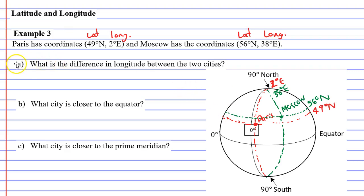Now question A says, what is the difference in longitude? Longitude being the key word, between the two cities. And longitude is talking about the 38 and the 2 degrees. Alright. So we're just going to go 38 degrees minus 2 degrees, which is 36 degrees. There's a 36 degree difference in longitude between the two cities.